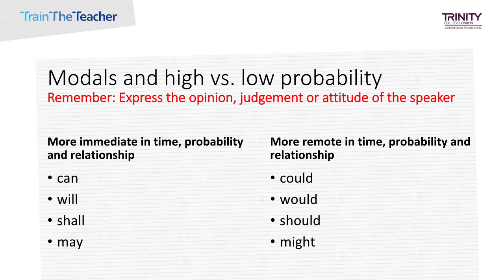In the main clause of conditional sentences we normally use 'will' or 'would'. What modals can be used instead to make the outcome less certain? For example: If she passes the test, she'll apply for the job. 'Will apply' sounds pretty definite. You could replace it with 'may apply', 'could apply', or 'might apply' — all of which sound less definite than 'will'.